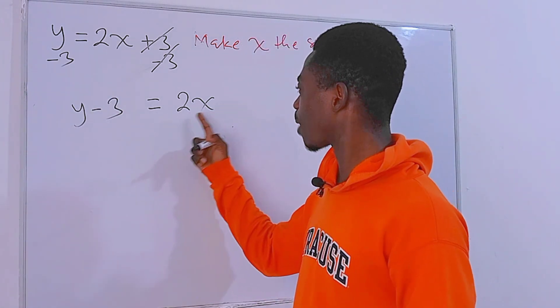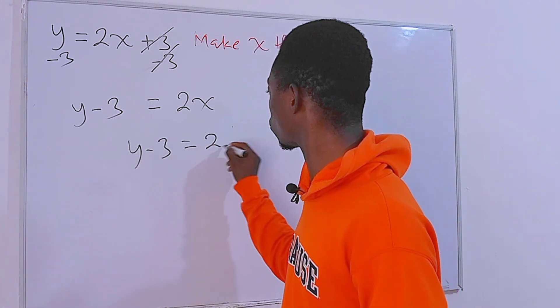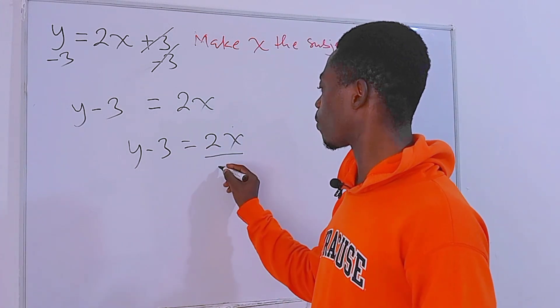Actually, we are looking for x but here we have 2x. So the most important thing that we have to do next is to actually divide each side of the equation by 2.